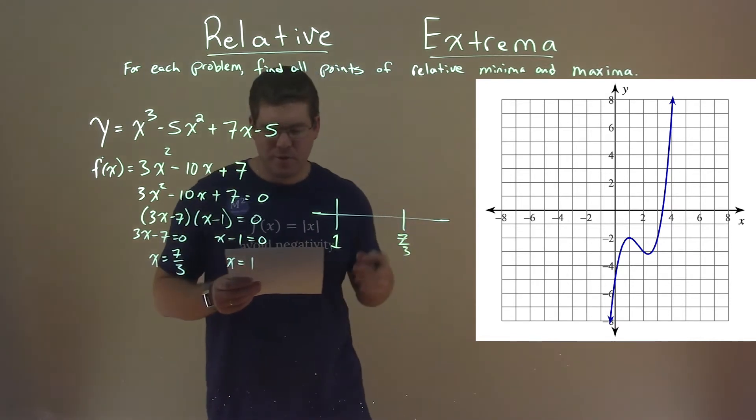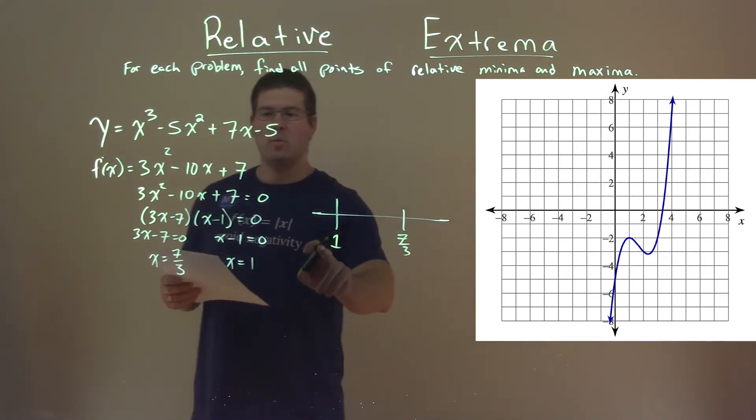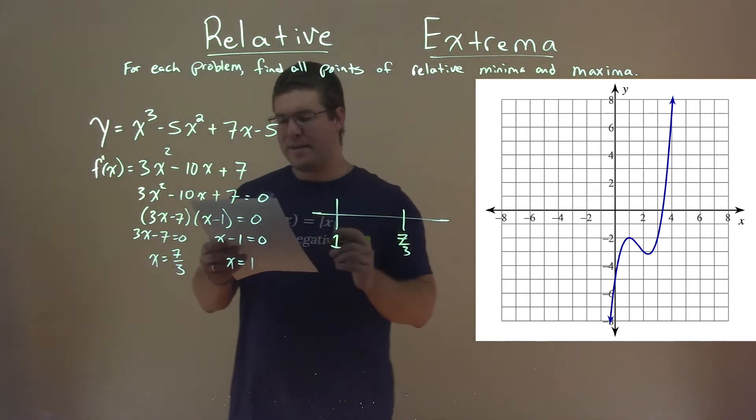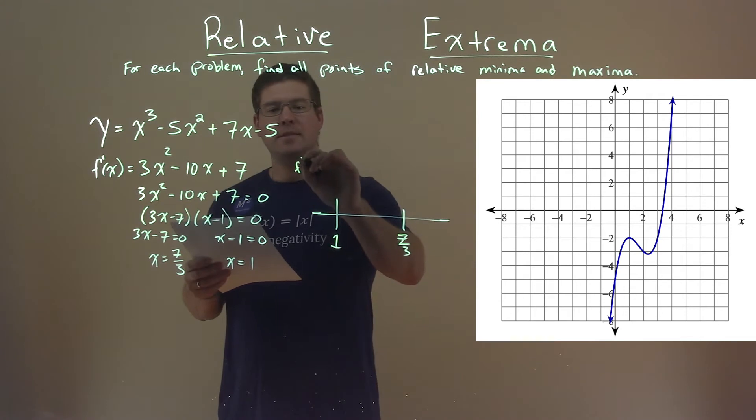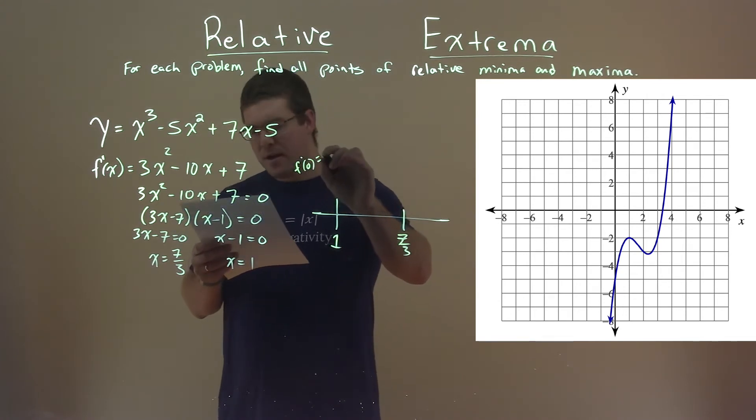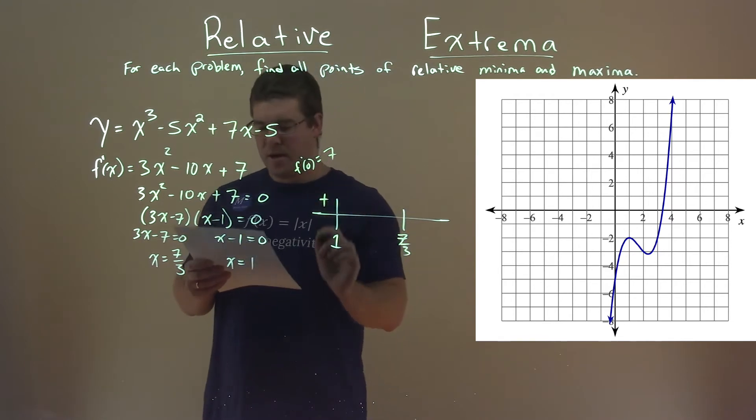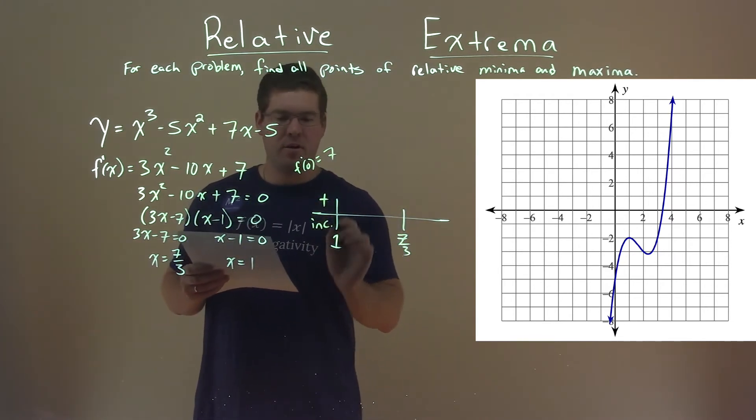So what we're going to do is plug in a value that's less than 1 into our derivative right there. I did that for you. I plugged in 0, so f prime of 0 comes out to just be 7. I just care that it's positive, so our function is increasing on this interval.